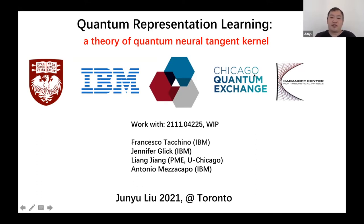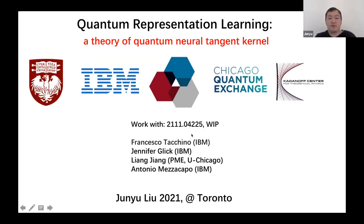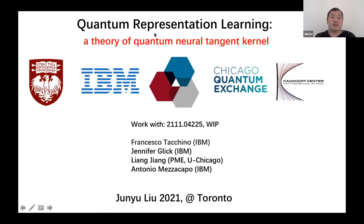My research is funded by institutions including University of Chicago, IBM, the Chicago Quantum Exchange, the Molecular Engineering Department of UChicago, and the Cardinal Center for Theoretical Physics at UChicago. The work is based on a paper and some other work in progress with collaborators led by Lian Jian at UChicago, Antonio Mezzocapa at IBM, and also Francisco Tacchino and Jennifer Glick from IBM and UChicago. The title of the talk is quantum representation learning: a theory of quantum neural tangent kernels. I will explain what those words mean.